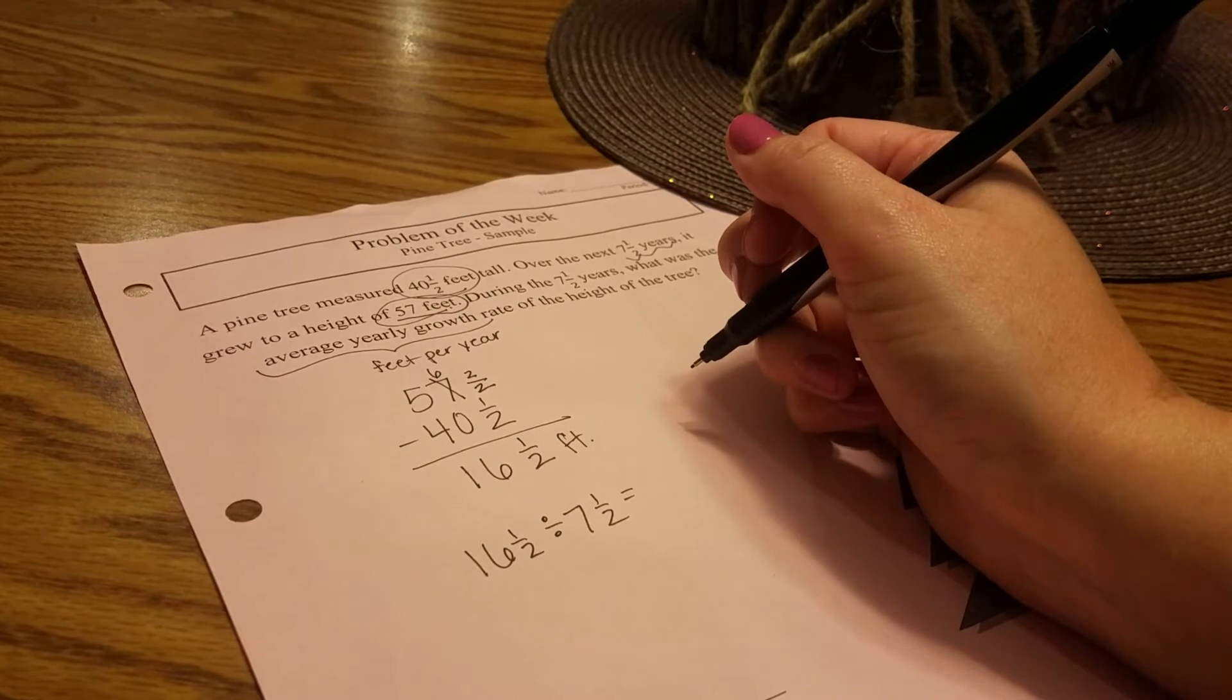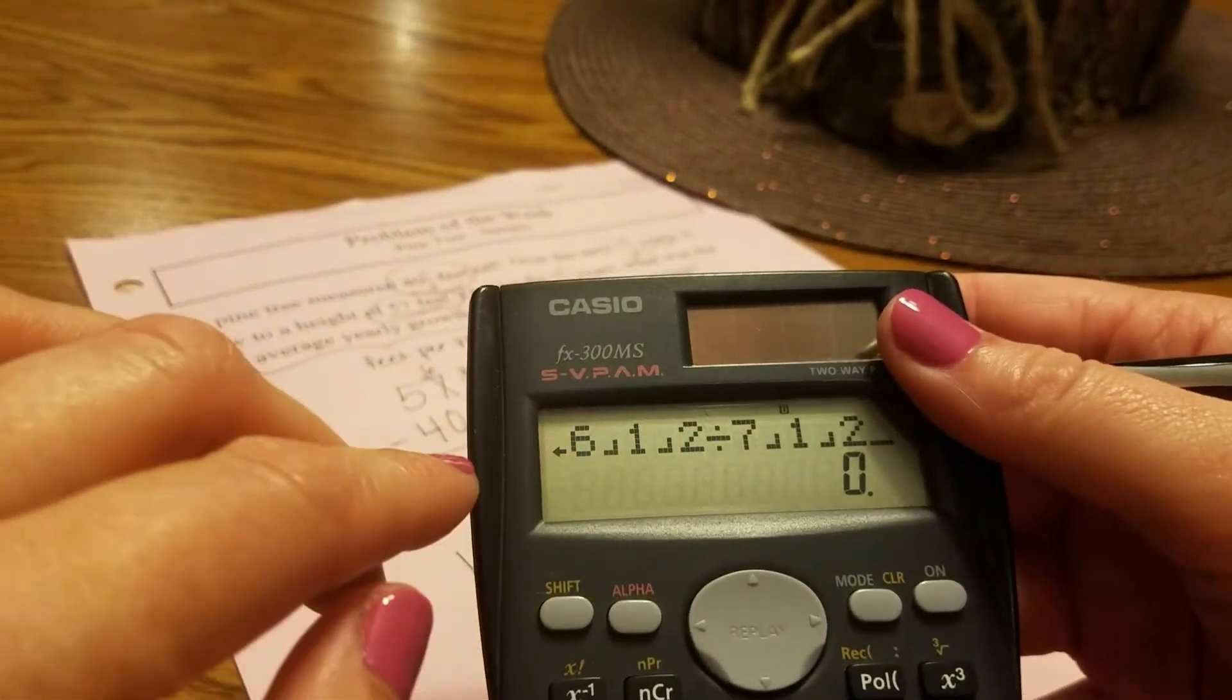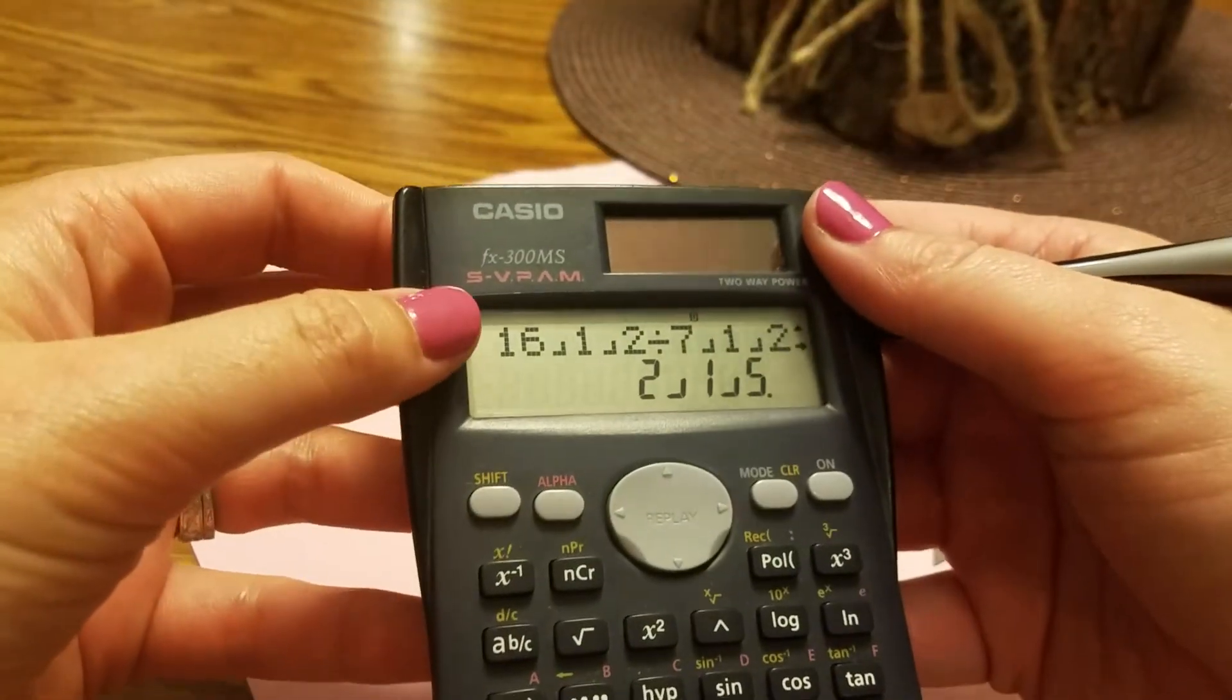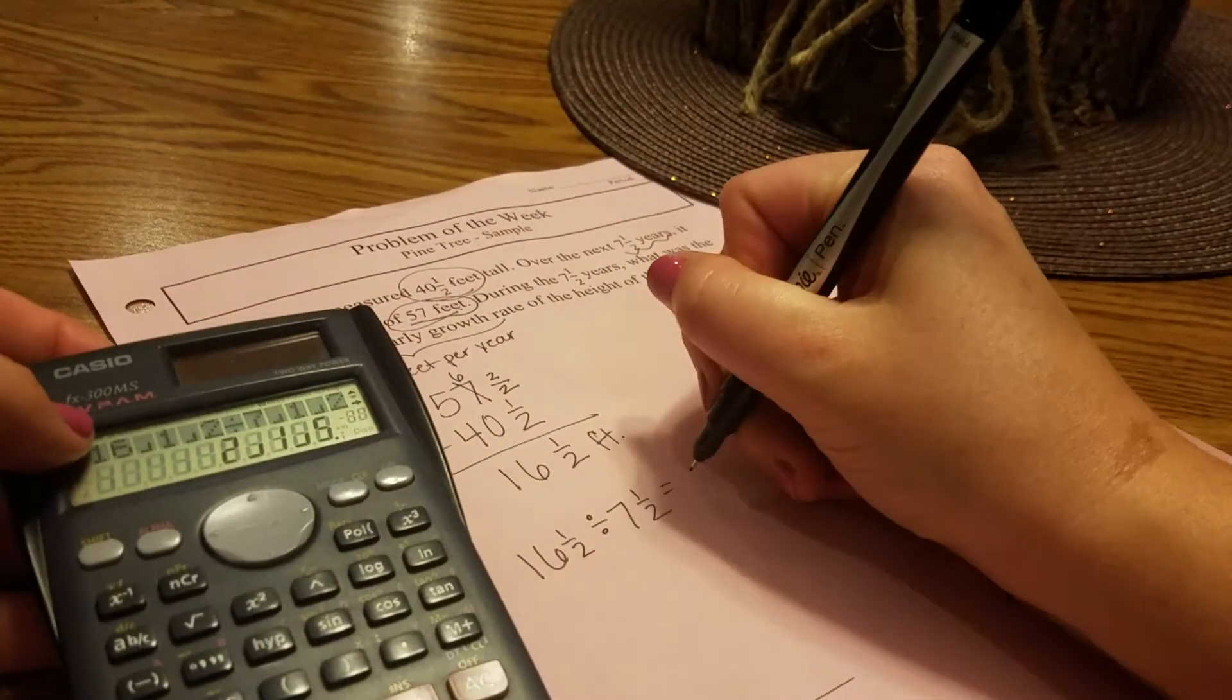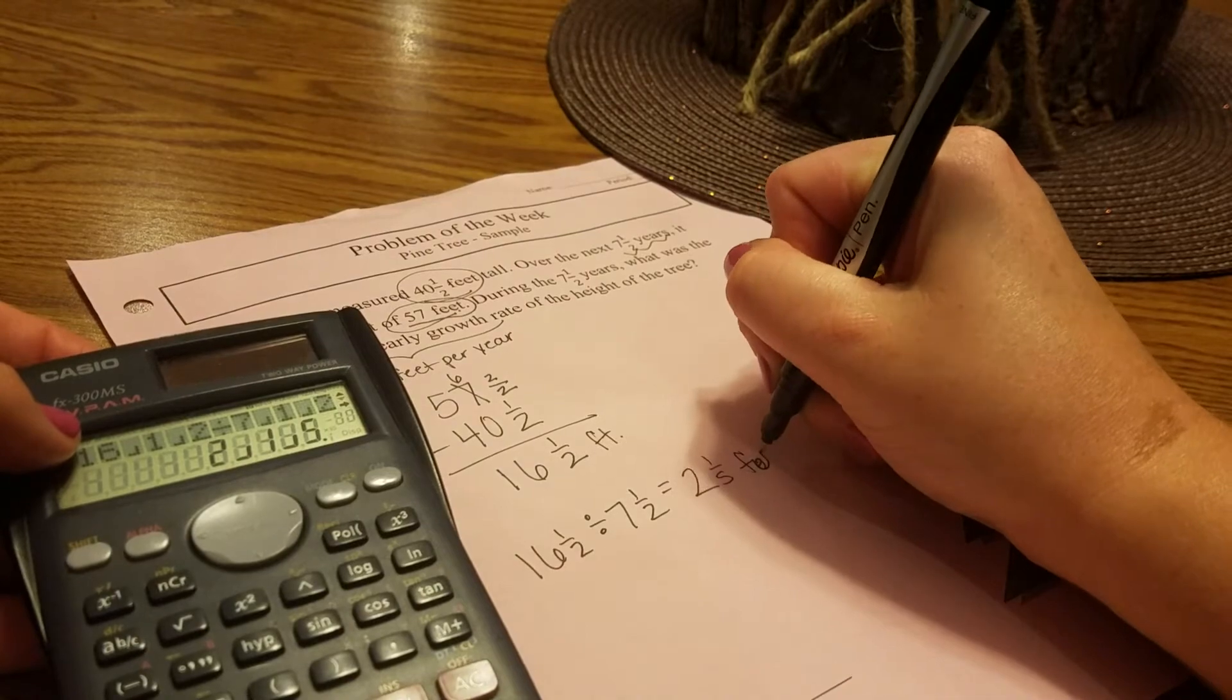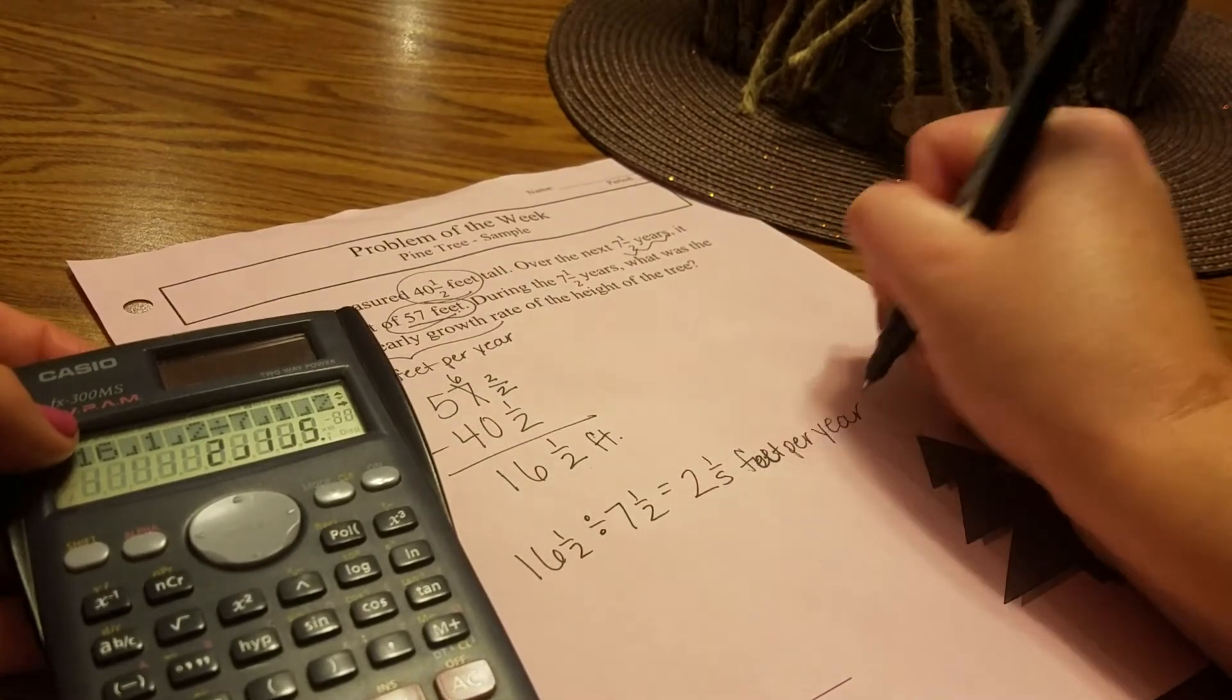You can type this into your calculator. You can do 16 and a half divided by seven and a half, and that's going to give you two and one-fifth feet per year.